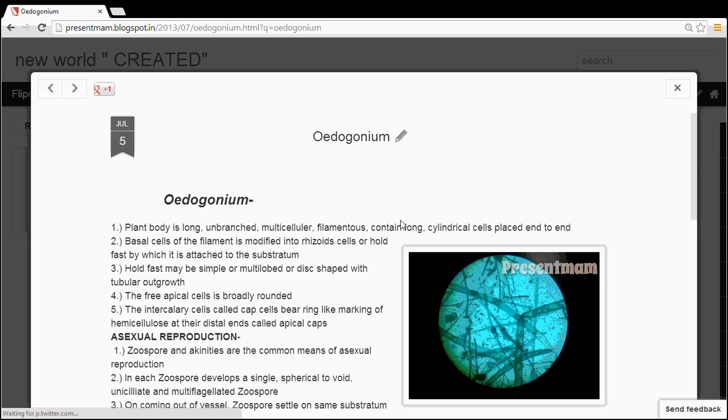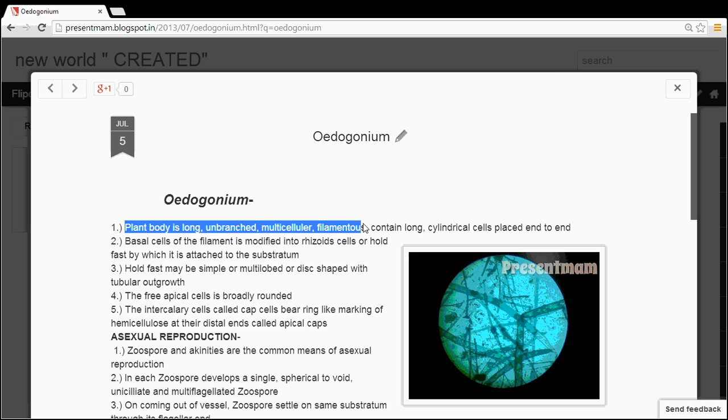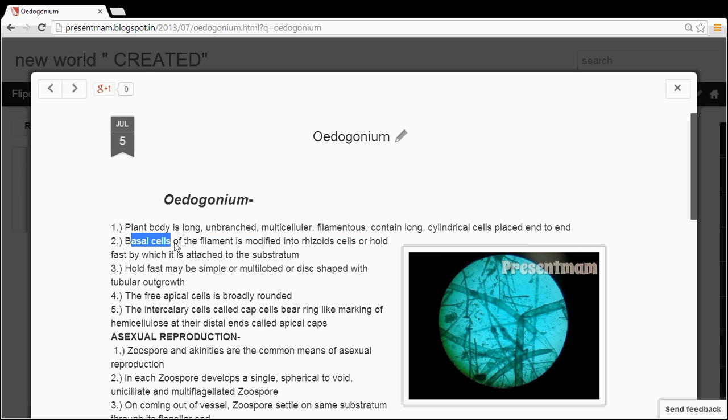Now today we are studying about Oedogonium. Oedogonium has some characters. The plant body is long, unbranched, multicellular filamentous, containing long cylindrical cells placed end to end. Their basal cell of the filament is modified into rhizoid cells or holdfast by which it attaches to the substratum.